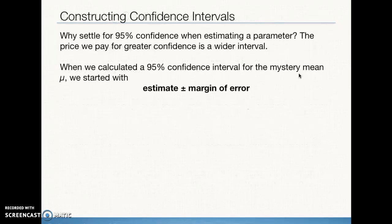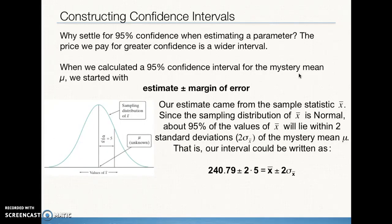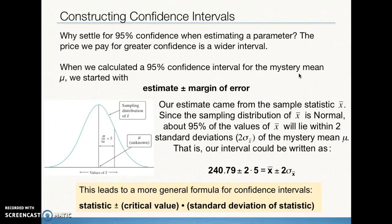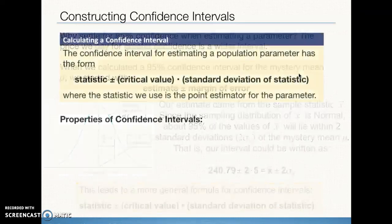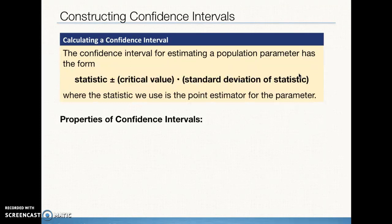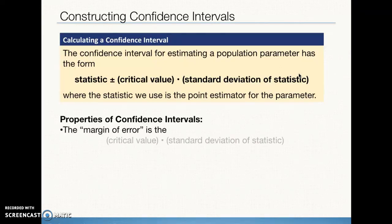Why settle for 95% confidence? The format of a confidence interval at any confidence level is always: point estimate plus or minus the margin of error. The margin of error is the product of the critical value — which we'll discuss in class — and the standard deviation of the statistic, which we call the standard error. We use the standard error because we don't know the population standard deviation.